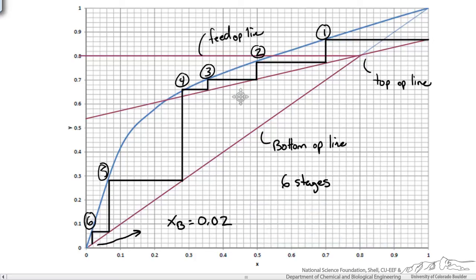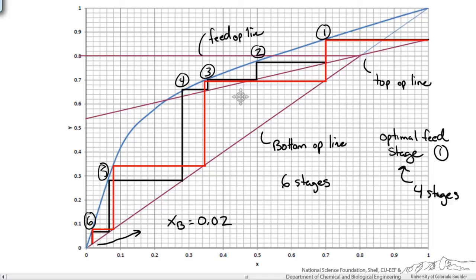Now the other thing you'll notice is that our feed line intersects our lines at stage 1. So our optimal feed stage technically would be stage 1. Remember the definition for optimal feed stage is where we would minimize the amount of stages in our system. If we did that, stage 1 was our optimal feed location, we would make that switch and start drawing our stages down all the way to the bottom to get that same composition. Here you see it would only take 4 stages in our column to achieve the same separation if we fed the vapor at stage 1.